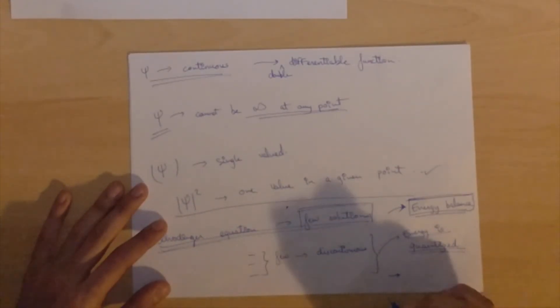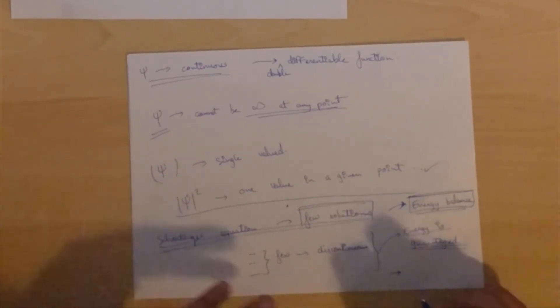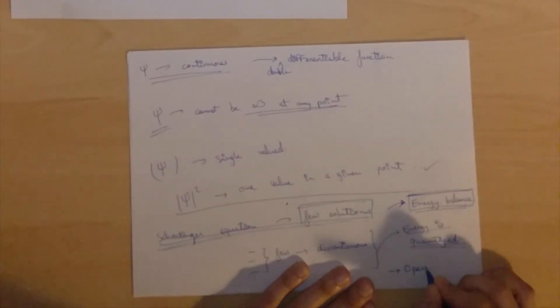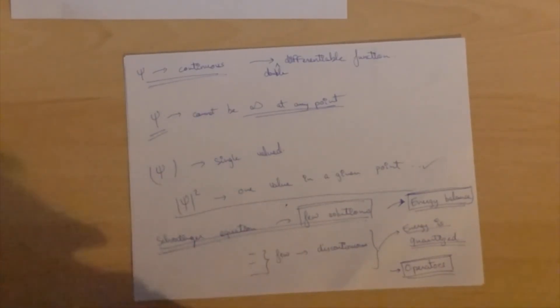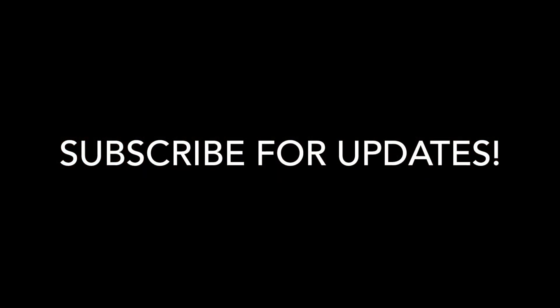So in the next video we're going to look at Schrodinger's equation in more detail, and we're going to look at some operators. And see what information actually is within the wave function, now that we know what it is. All right.